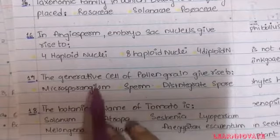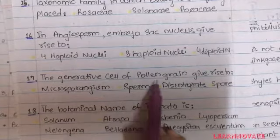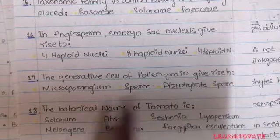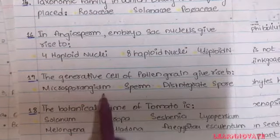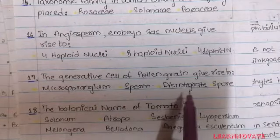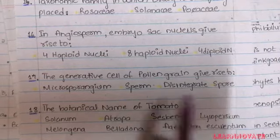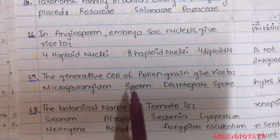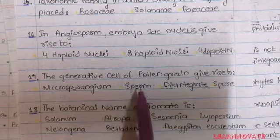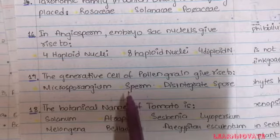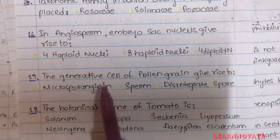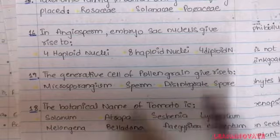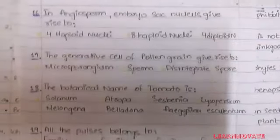Question 17: The generative cell of a pollen grain gives rise to — A. Microsporangium, B. Sperm, C. Disintegrates, D. Spore. The male structure produced from the generative cell of the pollen grain is sperm. So option B for question number 17 is correct.